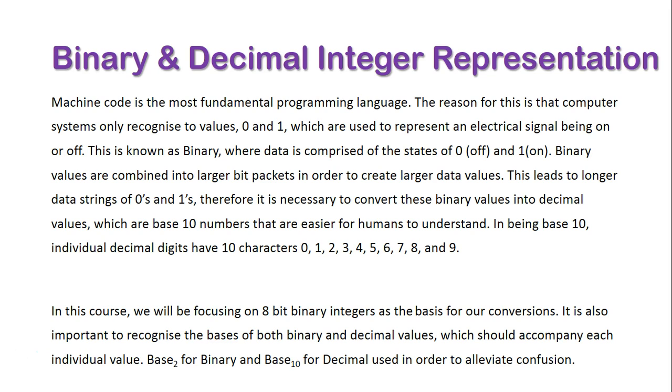In being base 10, individual decimal digits have 10 characters, which range from 0, 1, 2, 3, 4, 5, 6, 7, 8 and 9. All individual digits stand alone and they combine together to make up larger numbers as well.